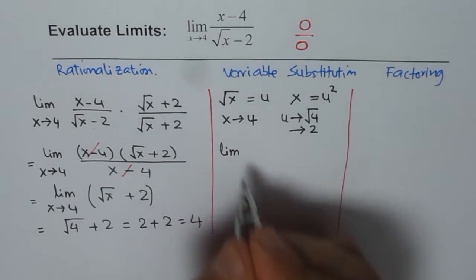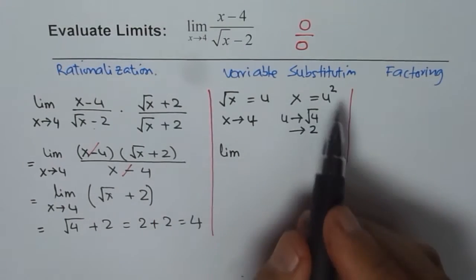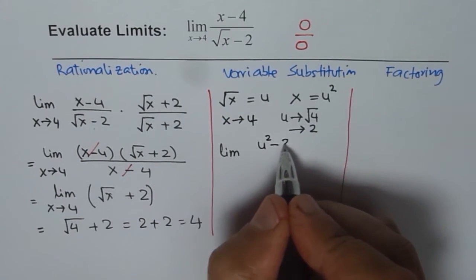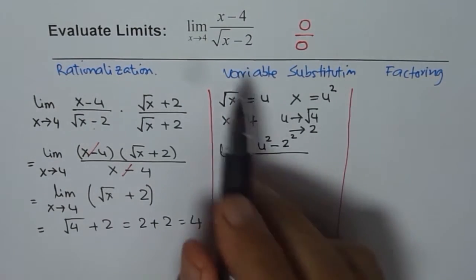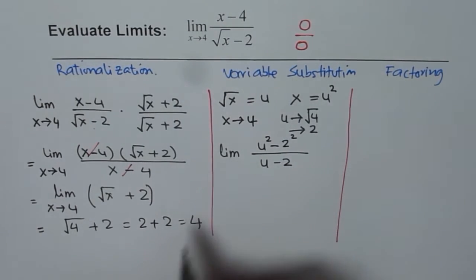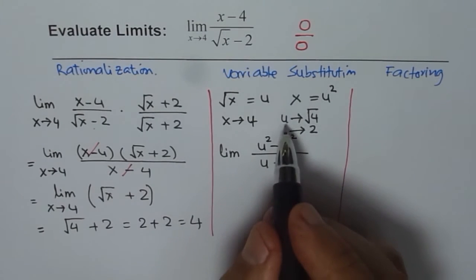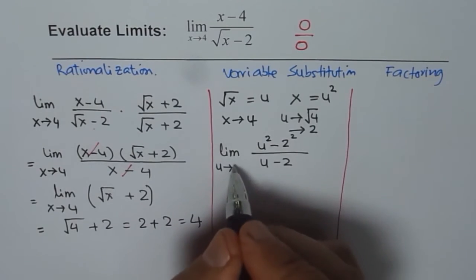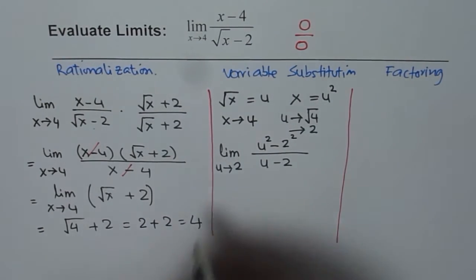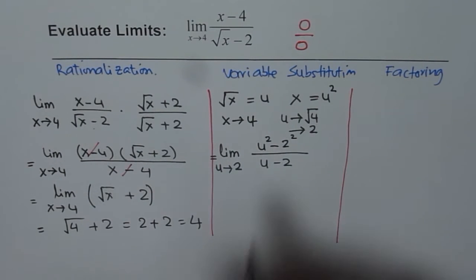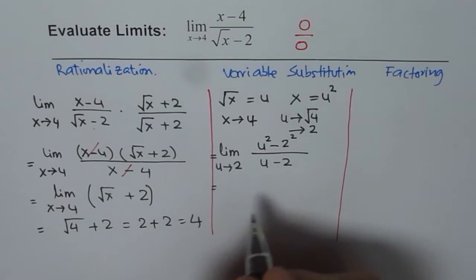So with this variable substitution, the question gets transformed. We can now write our question as limit of, instead of x I have to write u squared, so u squared minus 2 squared. Square root of x is u, so that is the new variable, minus 2. How about the limit? Limit instead of x we have to use u. u is our main part in the function and u approaches 2 as x approaches 4. So this is the function now. So we transformed the function by using the variable. Now the numerator is difference of squares, so we can factor it.